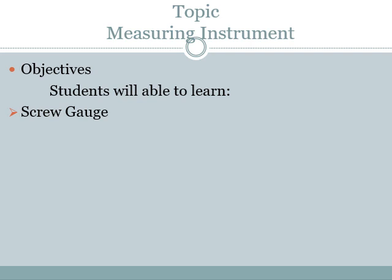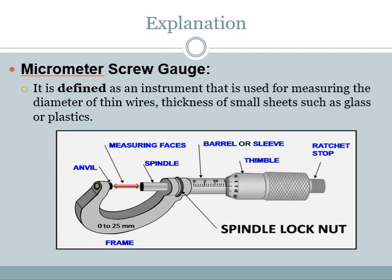We also covered how to take readings from Vernier Caliper. The next instrument is Screw Gauge or Micrometer — both are names for the same device. It is defined as an instrument used for measuring the diameter of thin wires and the thickness of small sheets such as glass or plastics. Micrometer measures very small diameters which cannot be measured by Vernier Caliper, just as Vernier Caliper measures small values that cannot be measured by a meter rule.